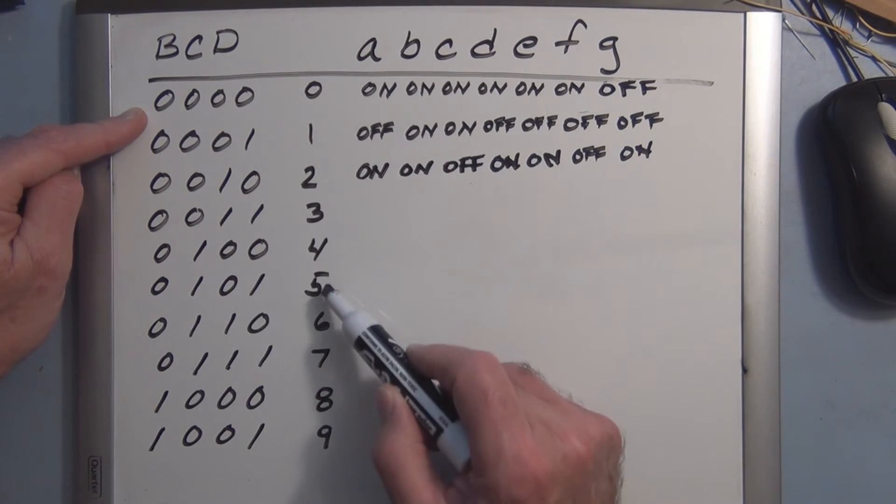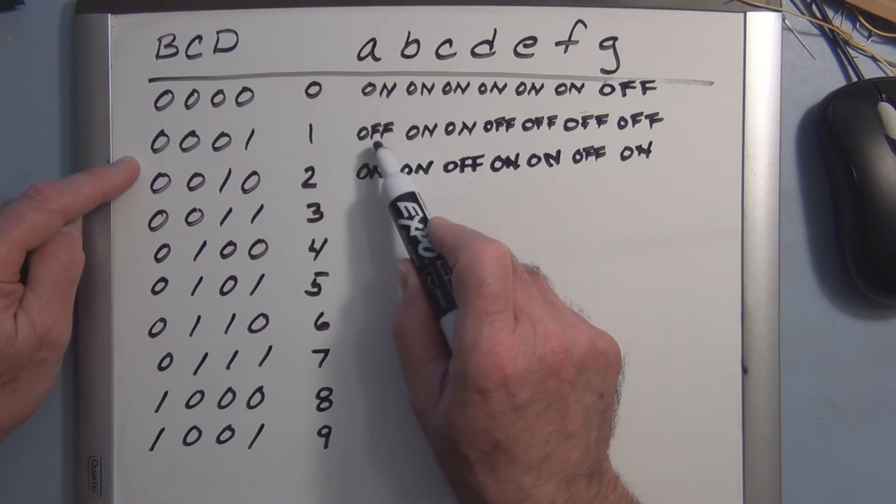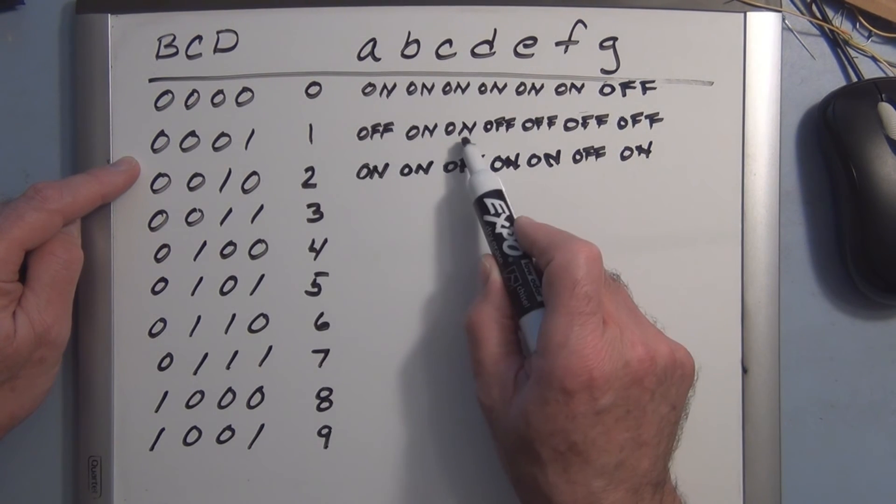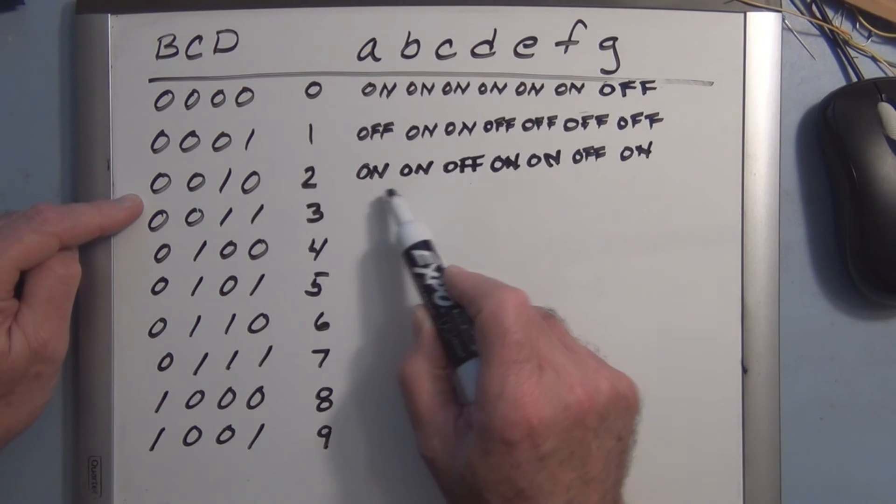So you go here and for the one, you say A is off, B and C are on, and then the rest are off to create a... to create a two.